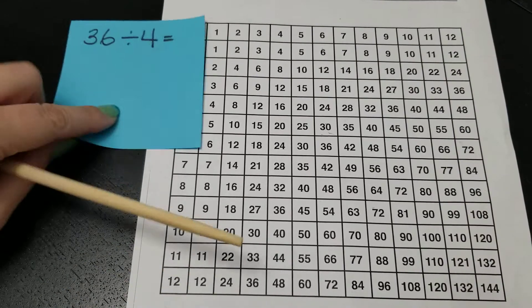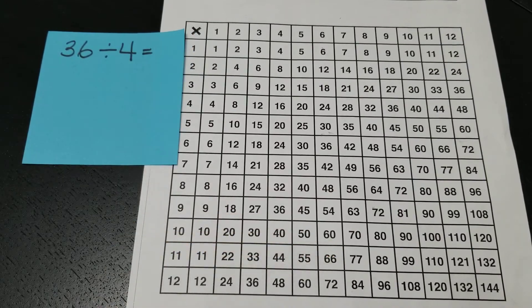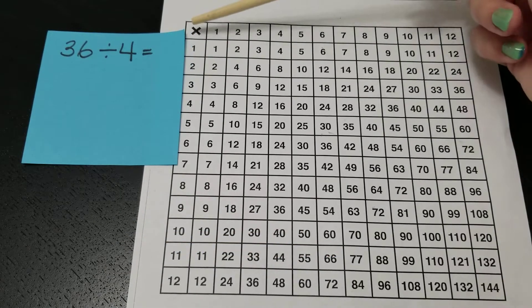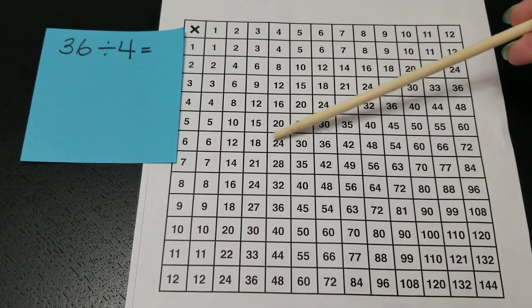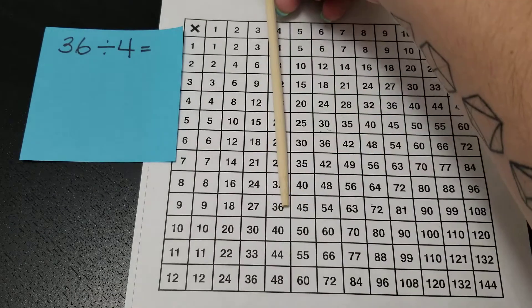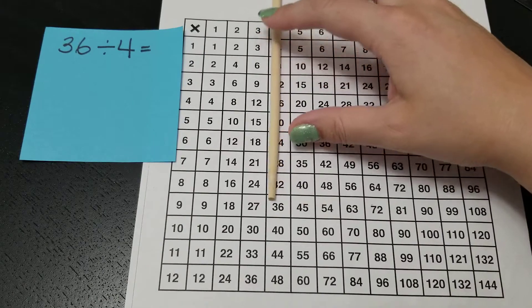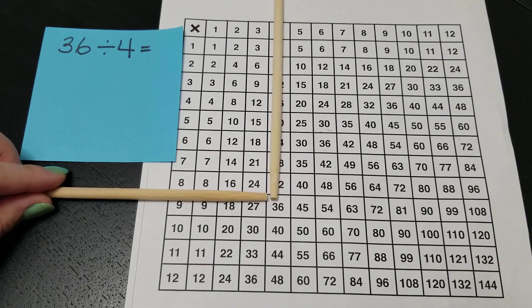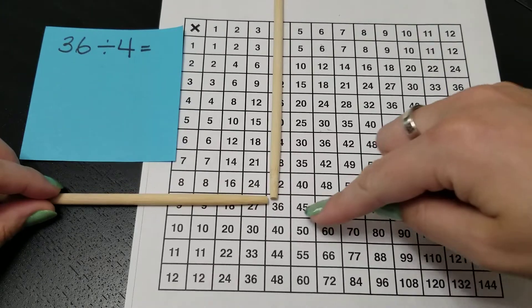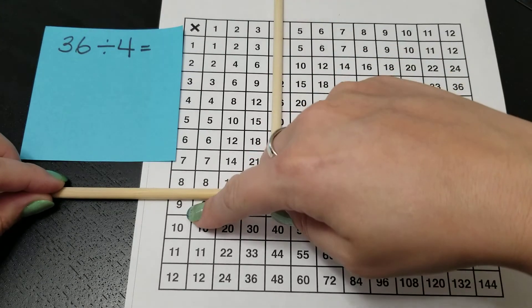Let's try another one. 36 divided by 4. So I'm going to follow the same steps. I'm going to go across to the 4. I'm going to go down until I find 36. There it is. And then I'm going to go straight across until I find the other number. 36 divided by 4 makes 9.